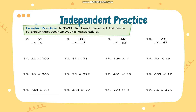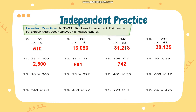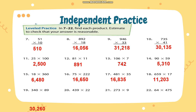Time is up. Let's check your answers. Number 7: 510. Number 8: 16,056. Number 9: 31,218. Number 10: 30,135. Number 11: 1,000. Number 12: 11,500. Number 13: 12,191. Number 14: 13,742. Number 15: 5,310. Number 16: 6,480. Number 17: 16,650. Number 18: 16,835. Number 19: 11,203. Number 20: 30,260. Number 21: 9,658. Number 22: 2,457. Number 23: 30,400.